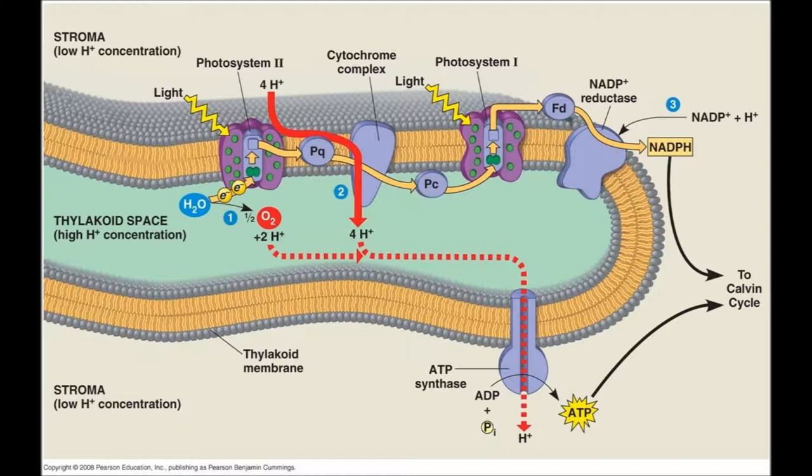The NADP plus reductase and the ATP synthase are more integral proteins on the thylakoid membrane. When the electrons pass through the NADP plus reductase, the energy powered in the electrons gives power to turn NADP plus into NADPH. The same process happens when the electrons move through the ATP synthase. This gives the power to make ADP into ATP.